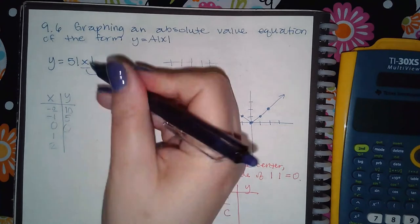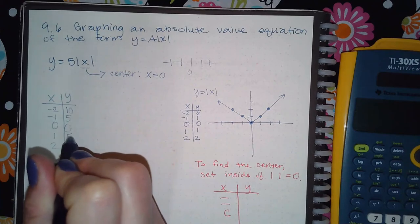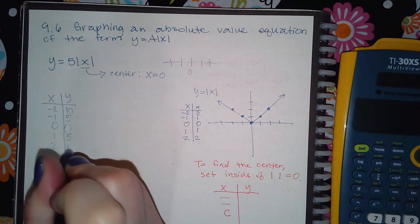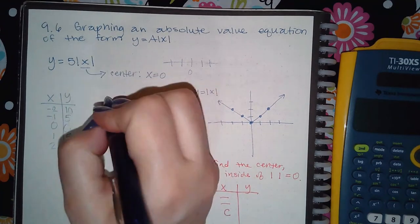And for one, absolute value of one is one times five is five. And the absolute value of two is two, but times five is 10. So I'm doing this for each one.